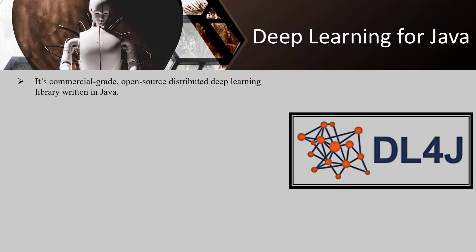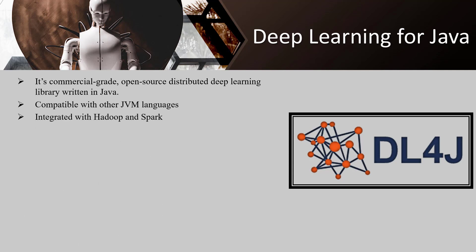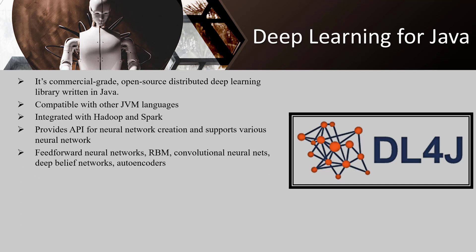Deep Learning for Java, DL4J, is the first commercial-grade open source distributed deep learning library written in Java. DL4J is compatible with other JVM languages such as Scala or Kotlin, and is integrated with Hadoop and Spark. It is meant to be a DIY tool for programmers. The mission of DL4J is to bring deep neural networks and deep reinforcement learning together for business environments rather than research.